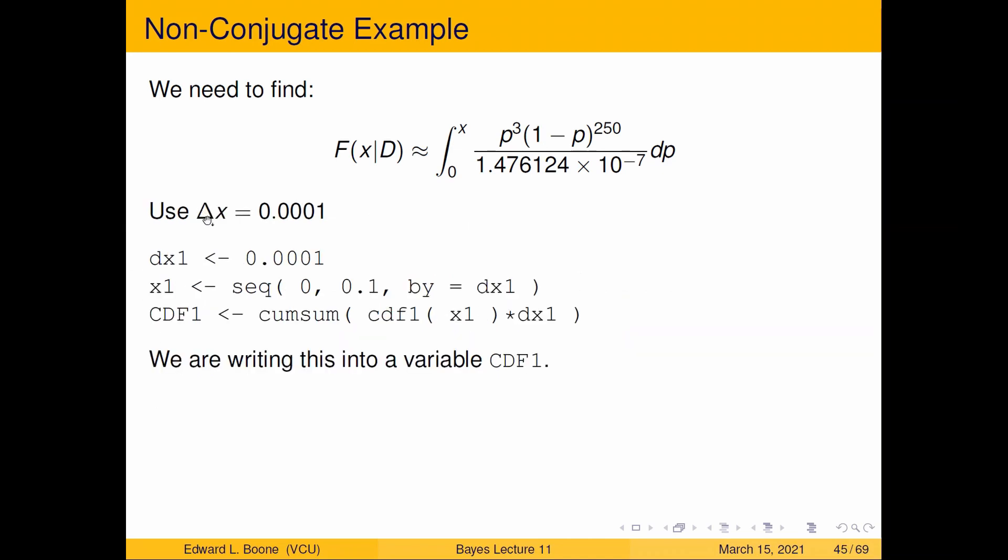I'm going to use x equals 0.00001 just like I did before because it seemed to give me the accuracy that I wanted, so why change it? This is exactly the same. The limits of integration are from 0 to 0.1 because that's as far as the actual prior distribution goes.